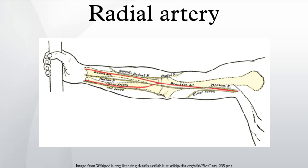In the hand: the princeps pollicis artery arises from the radial artery just as it turns medially to the deep part of the hand. Radialis indicis arises close to the princeps pollicis, and the two arteries may arise from a common trunk, the first palmar metacarpal artery. The deep palmar arch is the terminal part of the radial artery.